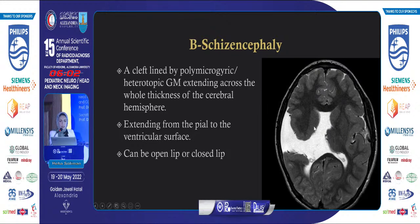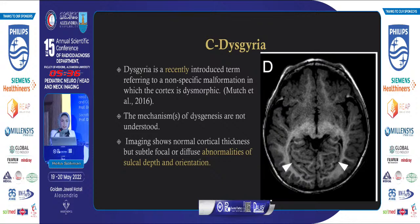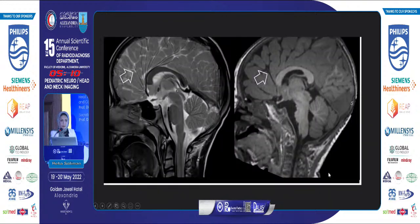Schizencephaly is a gray matter-lined CSF cleft extending from the lateral ventricle to the pial surface across the whole thickness of the cerebral hemisphere. It can be open lip, filled with CSF, or closed lip with a narrower cleft. Dysgyria is a recently introduced term referring to a non-specific malformation in which the cortex is dysmorphic; the mechanism is not yet well understood. On imaging, it shows abnormal orientation and depth of the sulci, such as bilateral symmetrical abnormal orientation of the occipital sulci, or abnormal orientation of the pericallosal sulci secondary to absence of the cingulate gyrus.